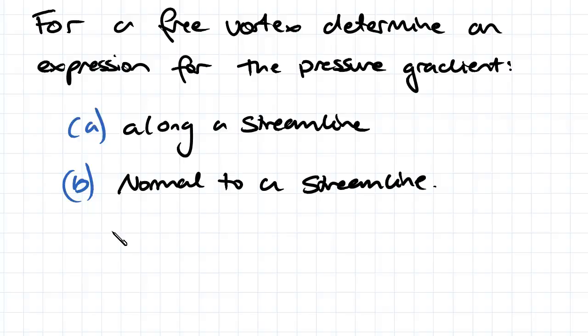So firstly we need to start with the equation for a free vortex, which we derived a couple of videos ago, and that is the streamline is equal to negative the circulation divided by 2π ln(r). So that's our equation for our streamline.